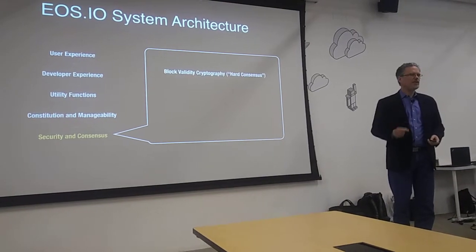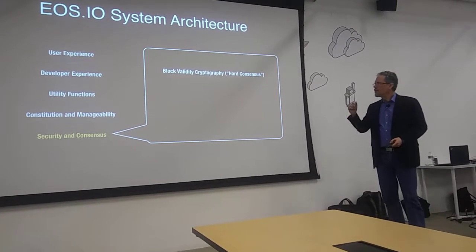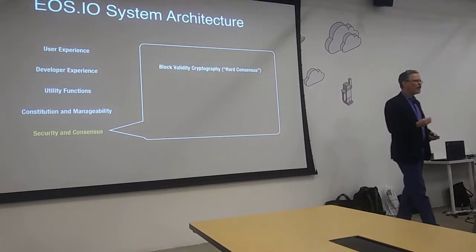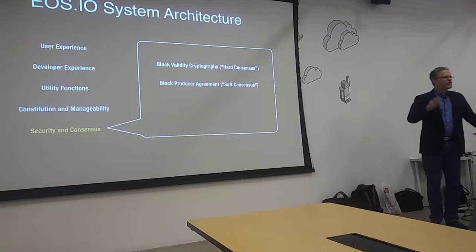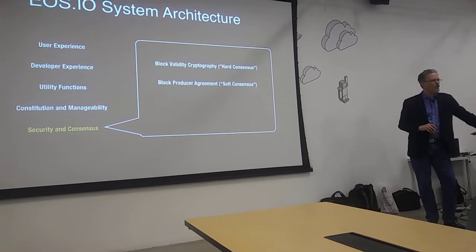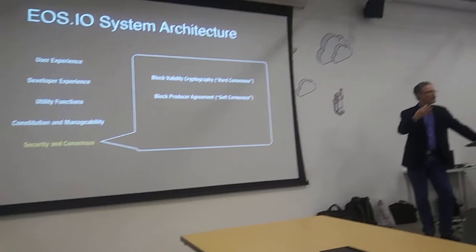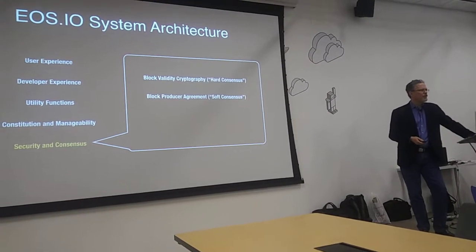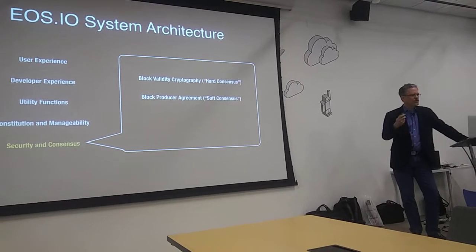And of course, at the bottom of the most layer: security and consensus. Hard consensus — the hard cryptography that keeps all blockchain safe. You also use soft consensus, which is a lower level of requirement where, for instance, block groups have to agree on the order in which they'll make transactions. They all have to agree, but no one else really has to. That's soft consensus.